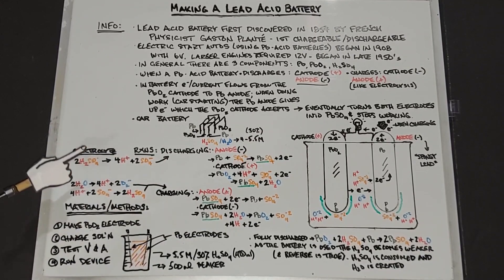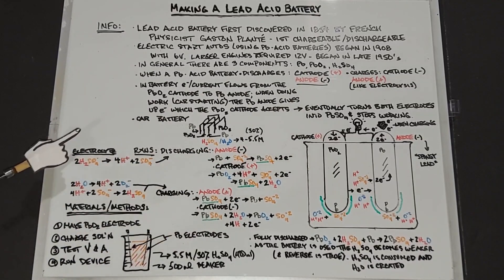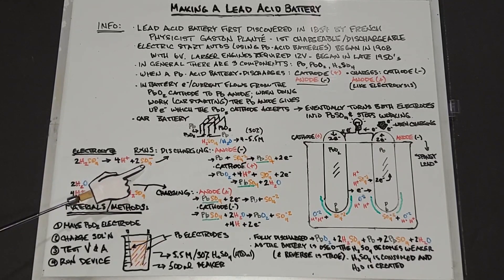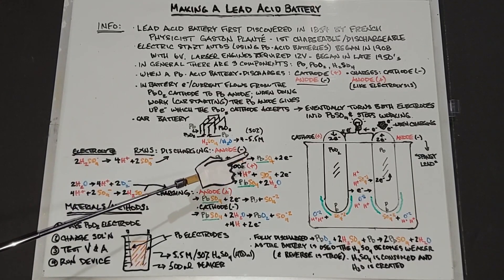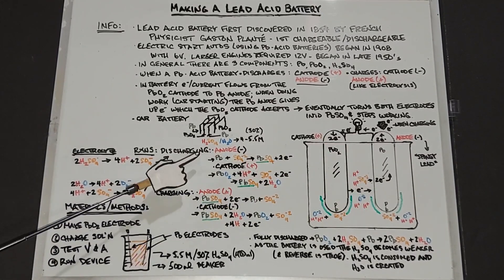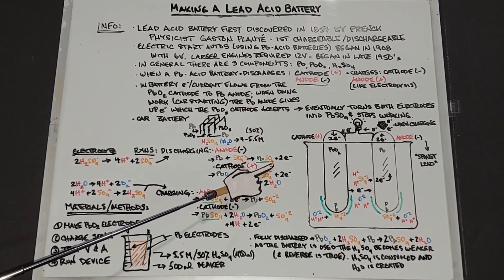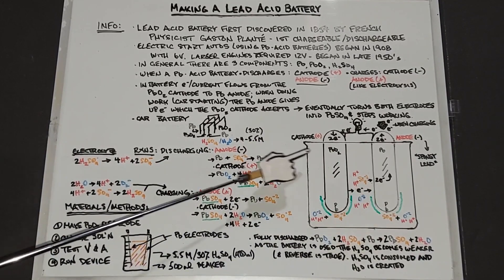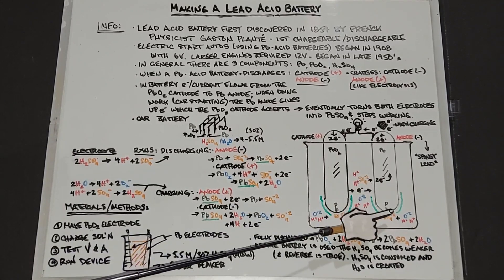Now to go over the reactions, bear with me because there is a bit here. This side is what happens to the electrolyte when the battery is discharging. When you're discharging a lead acid battery, you have two H2SO4 sulfuric acids break down into four hydrogens and two sulfate ions. On the anode when it's being discharged, you have lead plus the sulfate ions which yields lead sulfate plus two electrons.